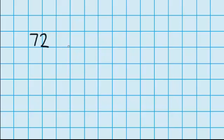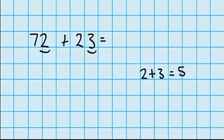Let's try one last question. This time I've got 72 and I want to add 23. Let's start by adding the 1's together — I've got 2 ones so I need to add them to these 3 ones. 2 plus 3 equals 5 ones. Now it's time to move on to the 10's: I've got 7 tens and I need to add 2 tens, so 70 plus 20 equals 90.